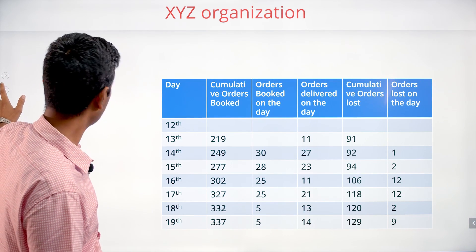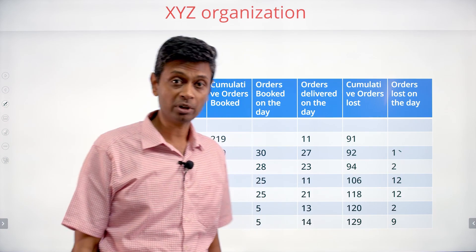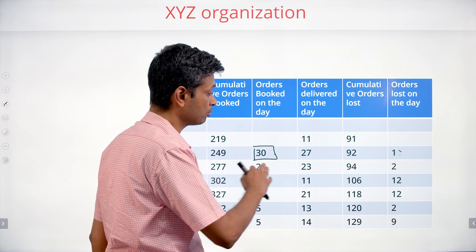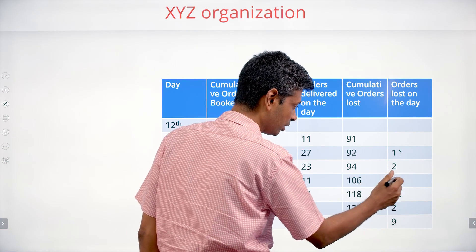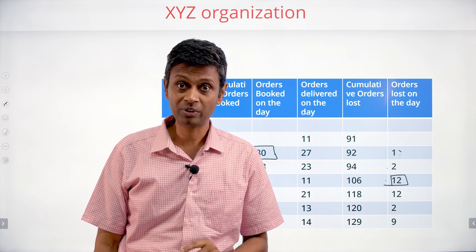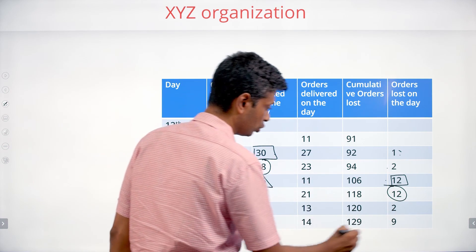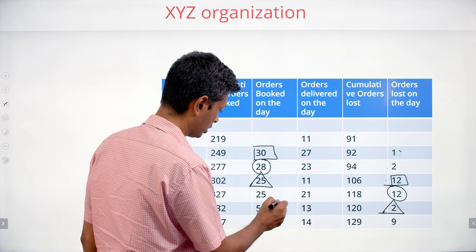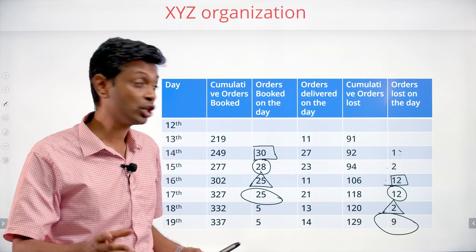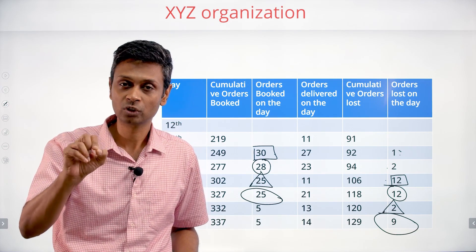Now, how do I find orders of a given day that were eventually delivered? Orders booked on the day is one number and orders lost on the day is another. Remember — what is lost on a given date is not necessarily what was booked on that date. An order booked on day n is tried on n+1 and n+2, then marked as lost at the end of n+2. So orders booked on 14th will be tried on 15th and 16th, then marked as lost at the end of 16th.